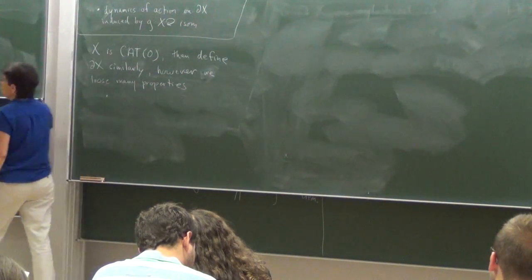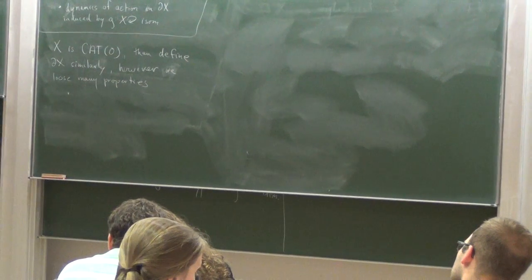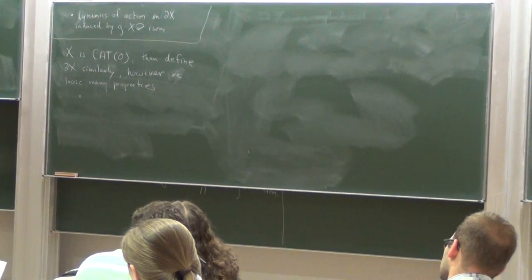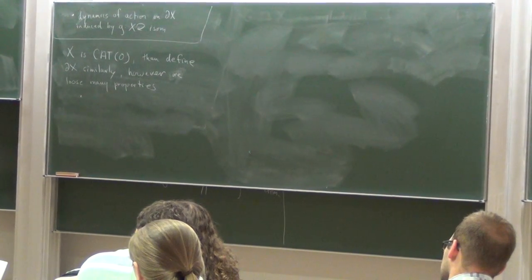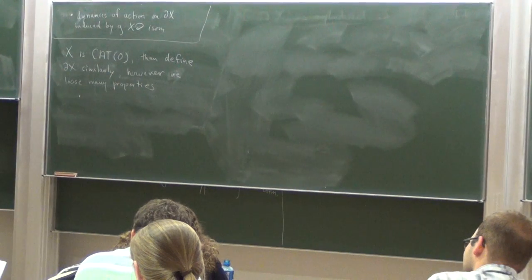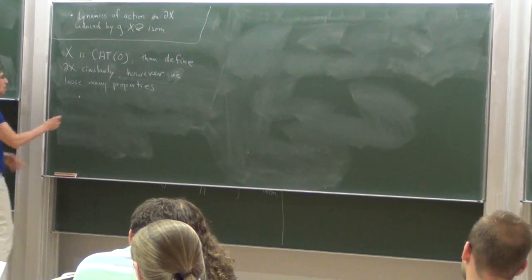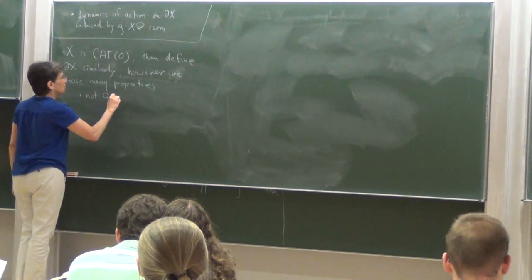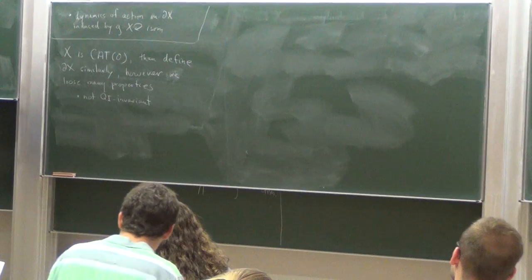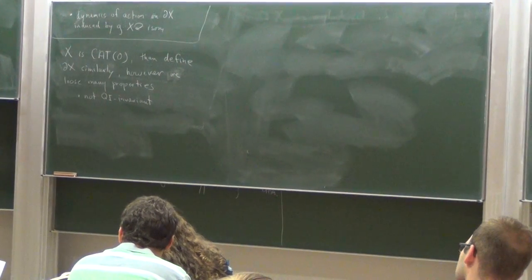So the first question, this was an open problem for some time. If these are now CAT(0) instead of hyperbolic, is it true that a quasi-isometry induces a homeomorphism on the boundary? And that turned out to be false. This was the example of Kramer and Kleiner, gave an example of this. Fairly simple spaces. Salvetti complex is the right angle Artin group, so a very slight change in the metric, and boom, the boundary changes. So not QI-invariant.